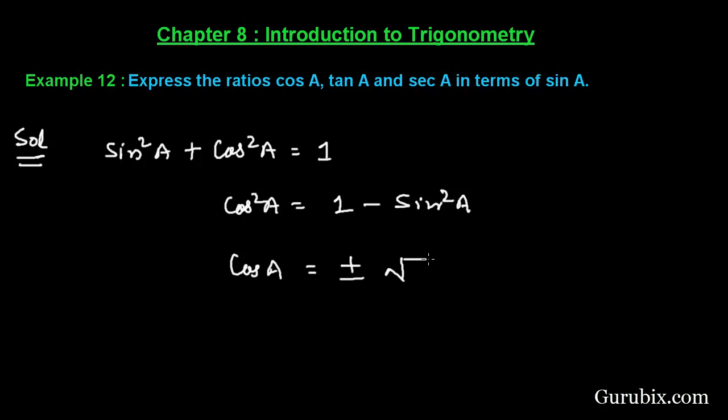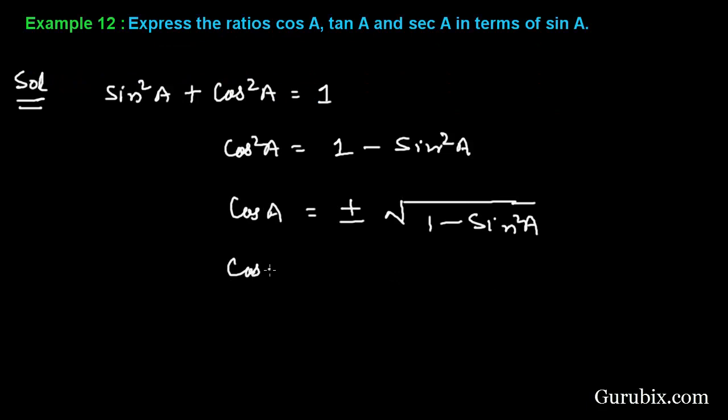But we shall take the positive value because in class 10 standard we study theta from 0 to 90 degrees, and from 0 to 90 degrees cos theta is positive. Then we have +√(1 - sin²θ).